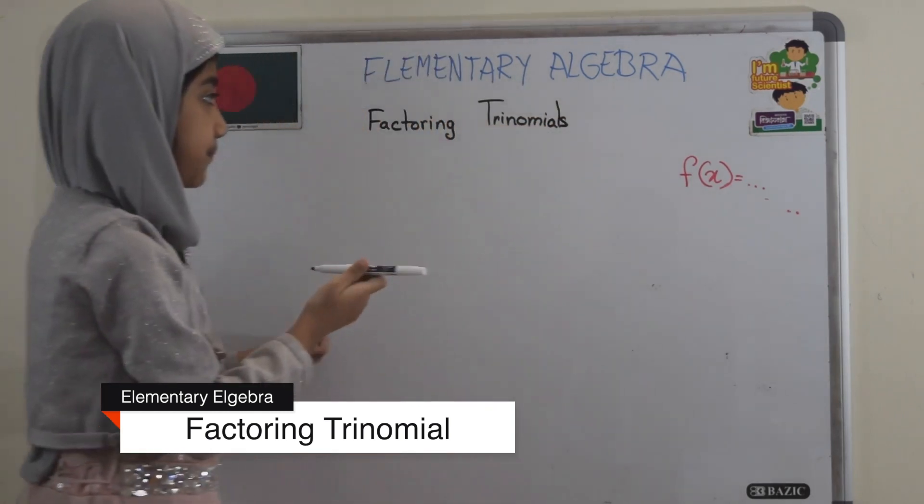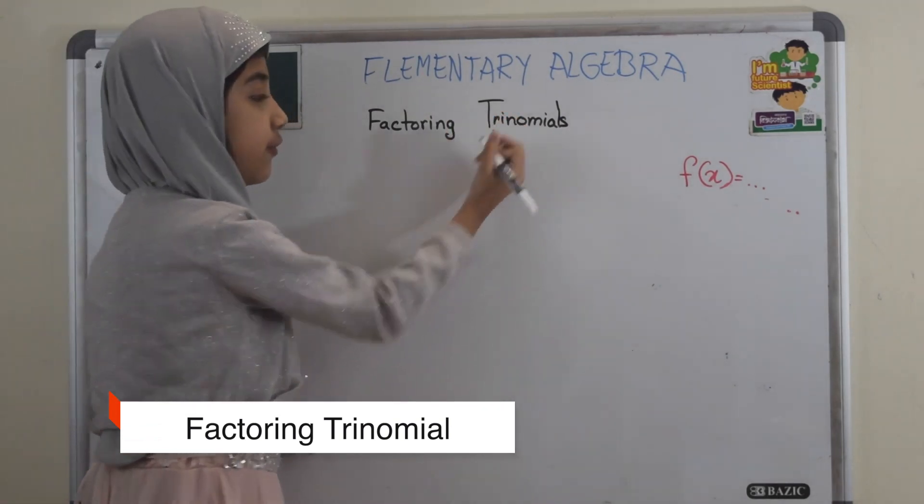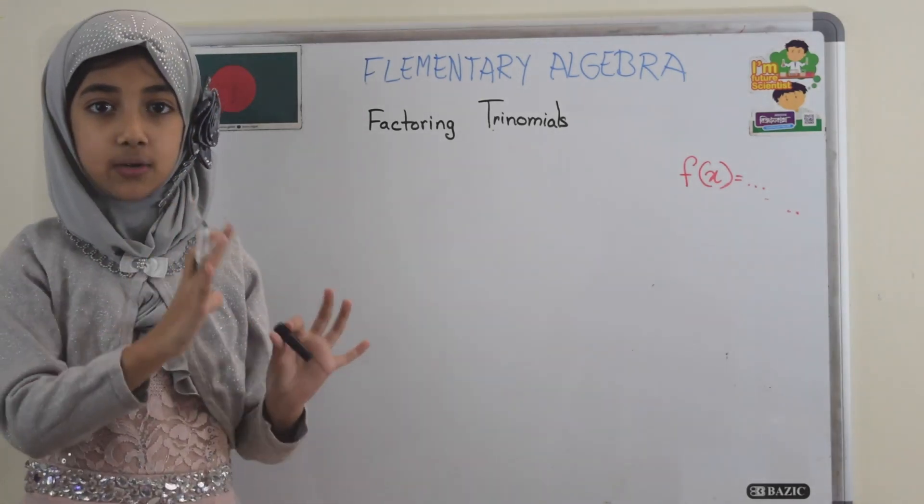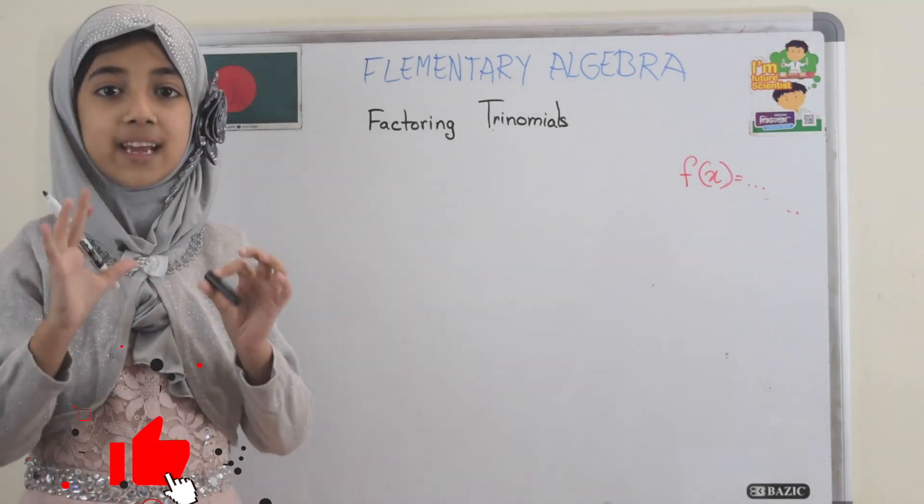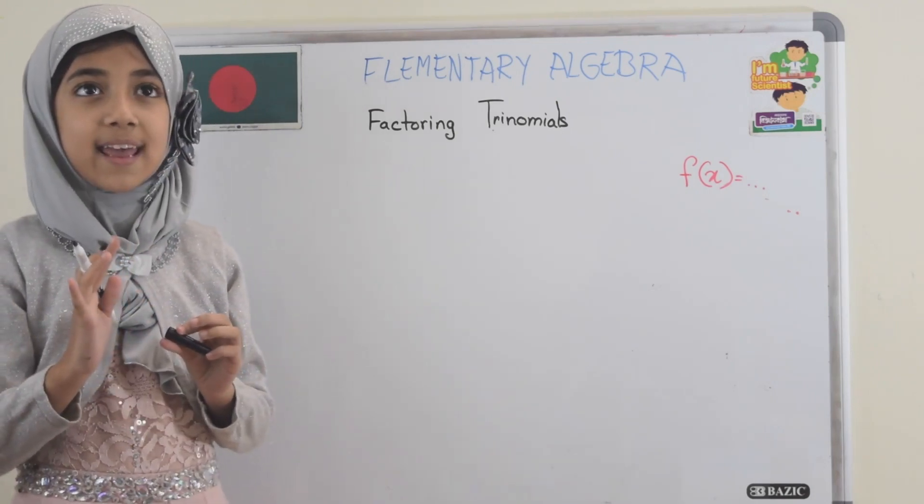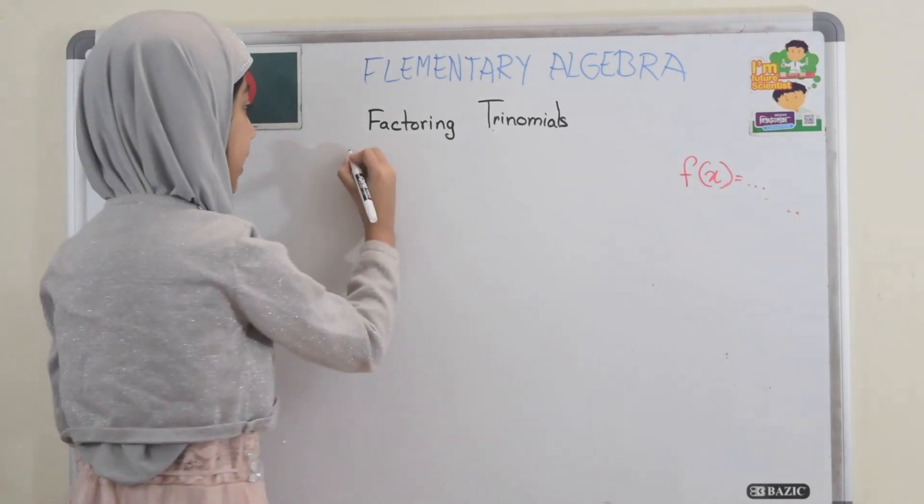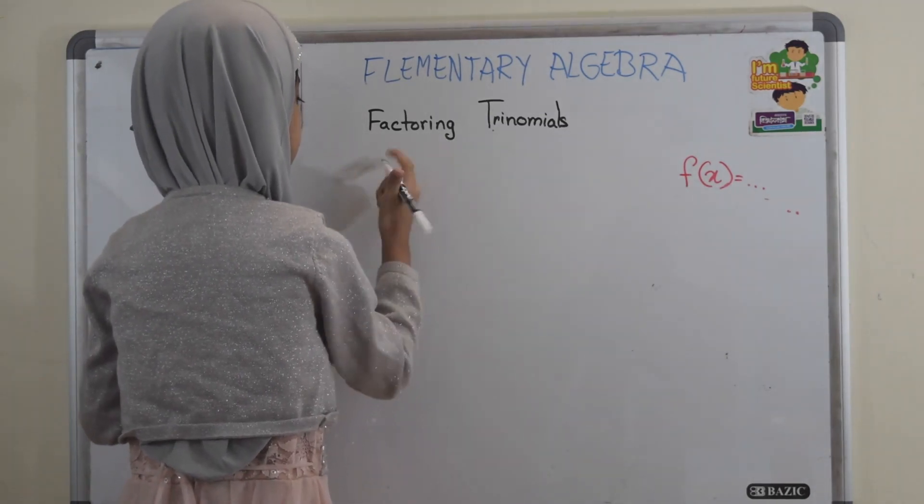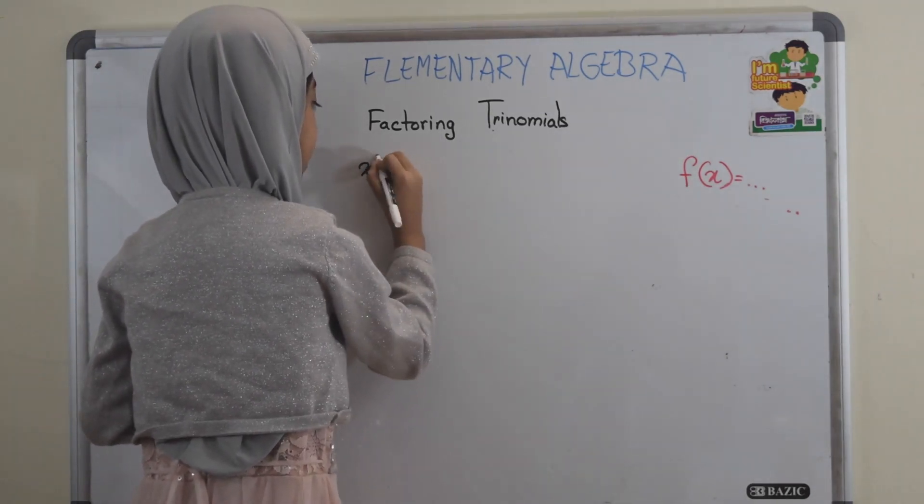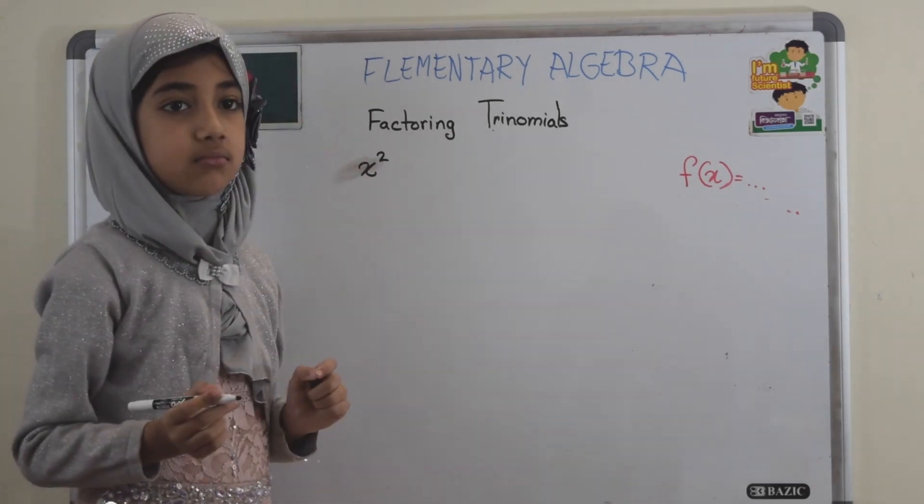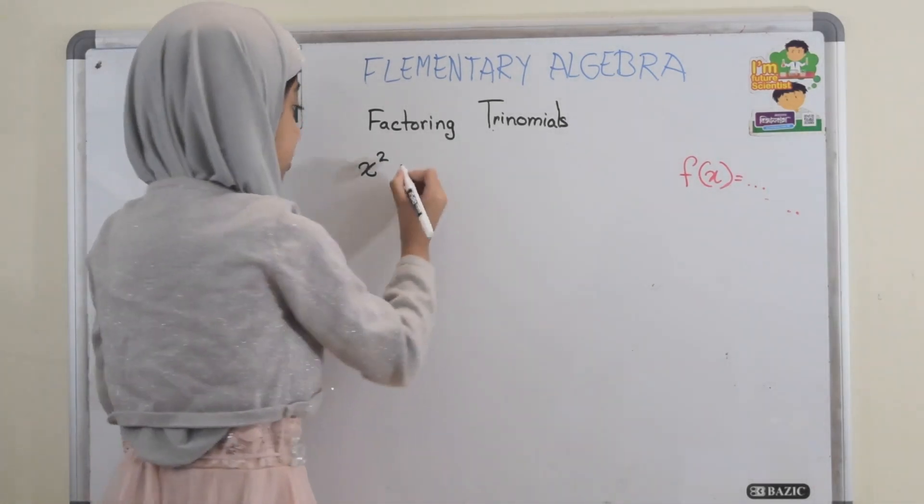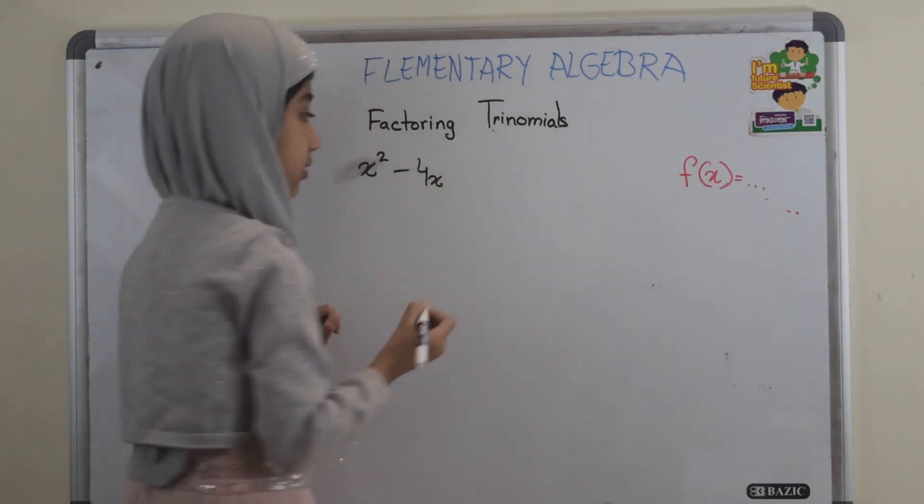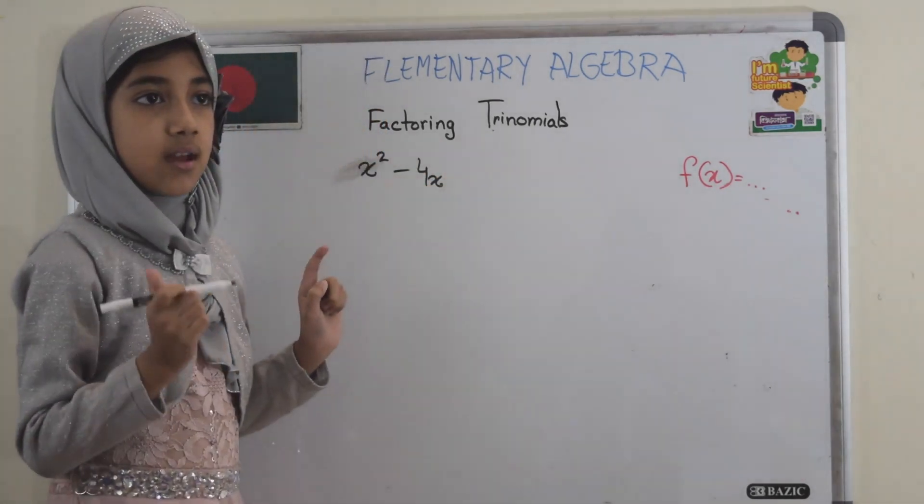So first, to do factoring trinomials, I've got to take trinomials. So let's say, let's take x squared minus 4x minus 45.